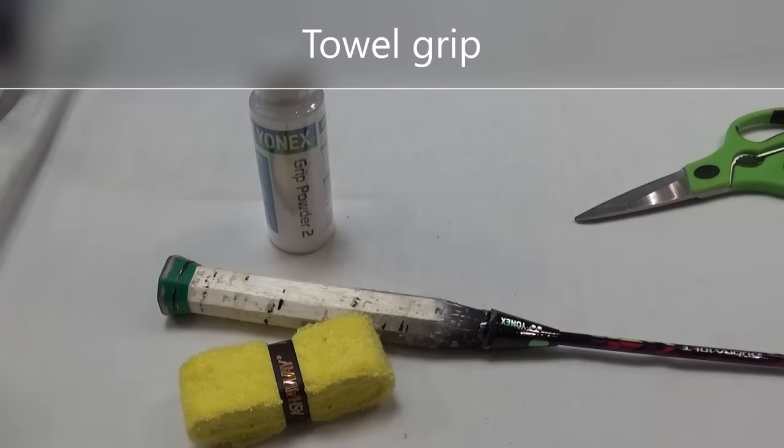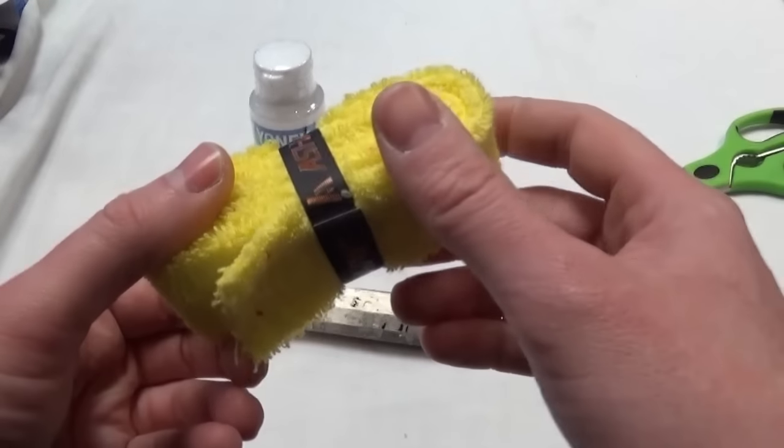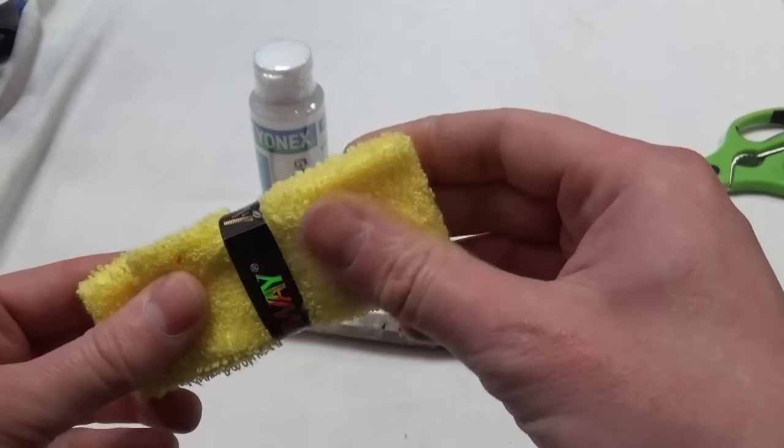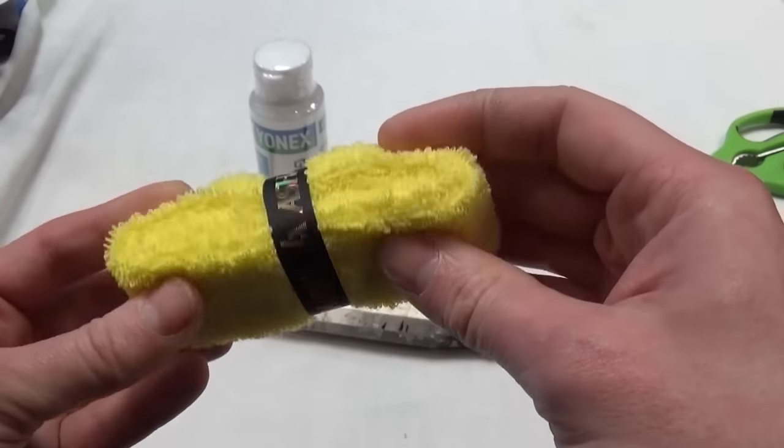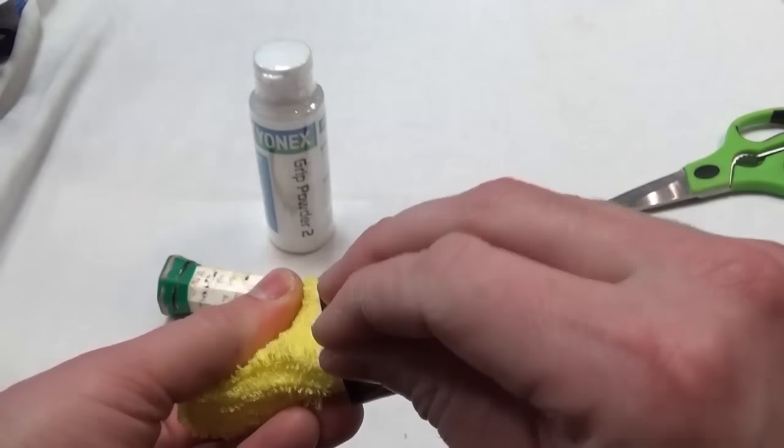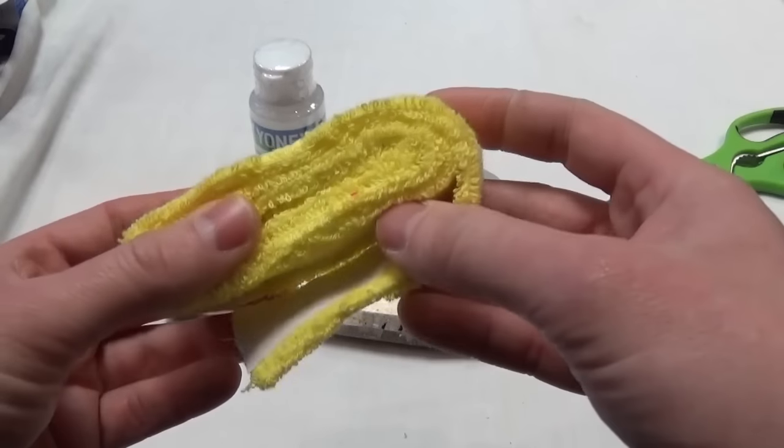A lot of professional players like to use a towel grip. Now these are really good when you're in particularly humid conditions or if you sweat a lot and they're very absorbent. Not quite as popular with our customers as the PU grips or the over grips but I thought I'd show you them anyway.